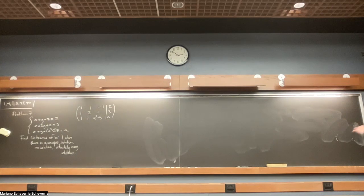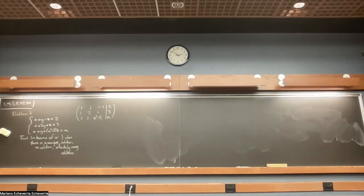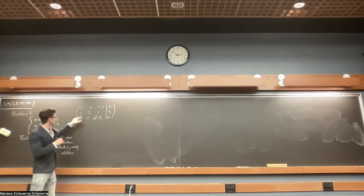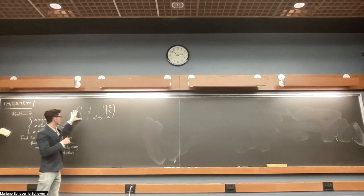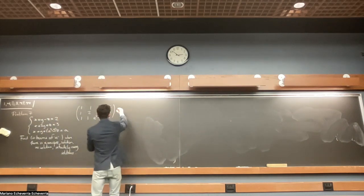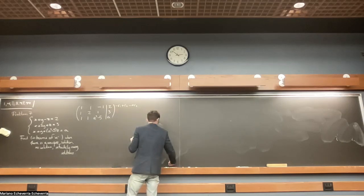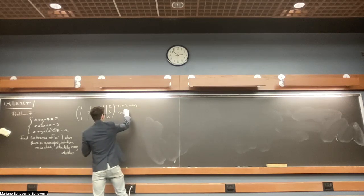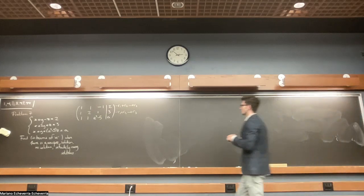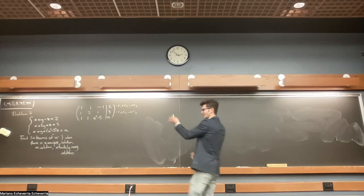The matrix has already been reduced to some extent. We need to reach the identity as much as possible. Use the 1 in the first entry to put zeros in the rest of the first column. Once you have a 1 here, make the first column all zeros, and so on. As a time-saving strategy, if operations are taking place on different rows, it's better to do them simultaneously to avoid copying the matrix more than necessary.